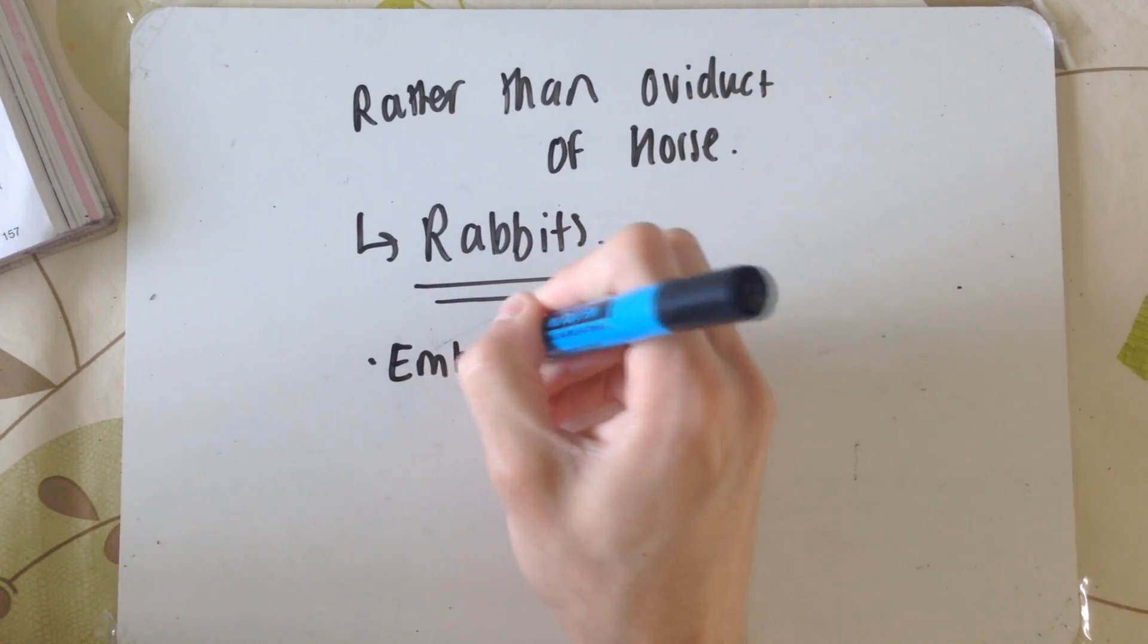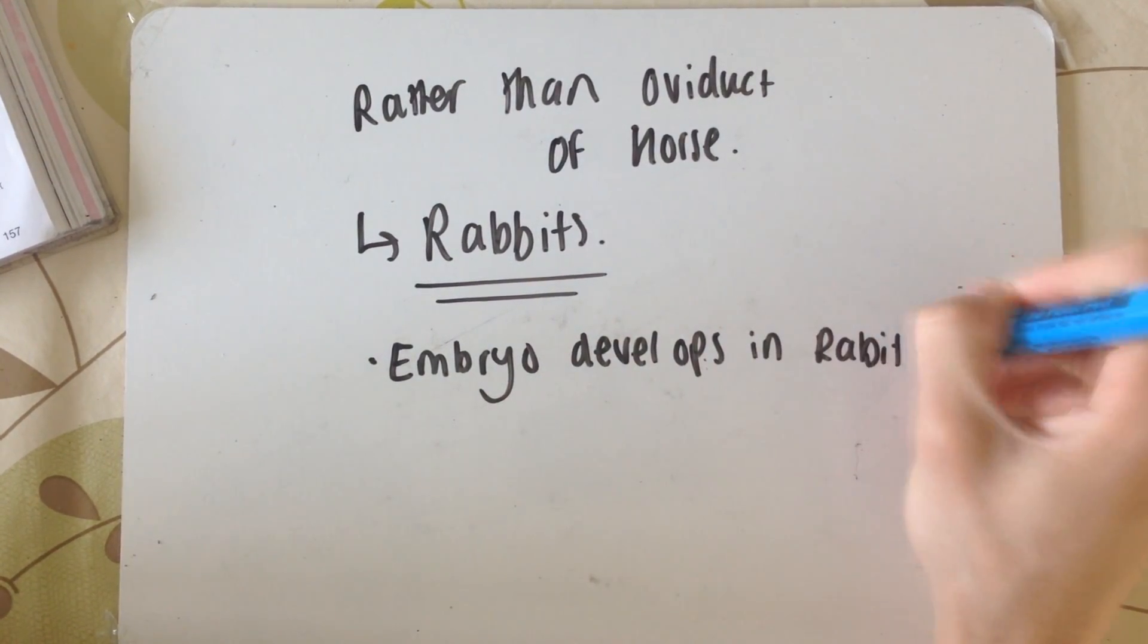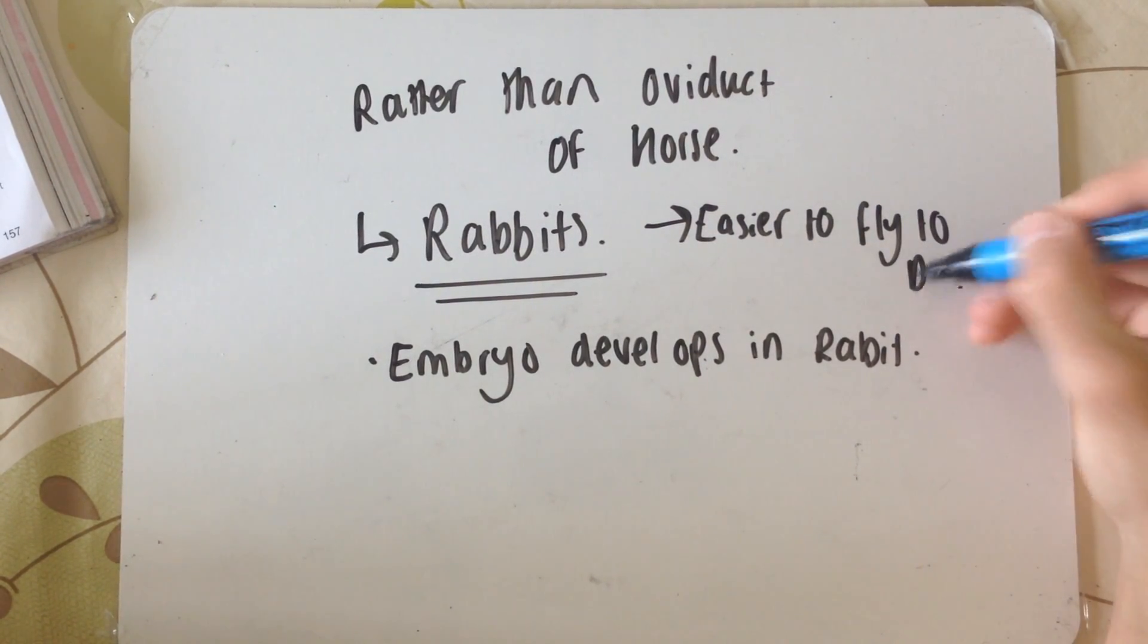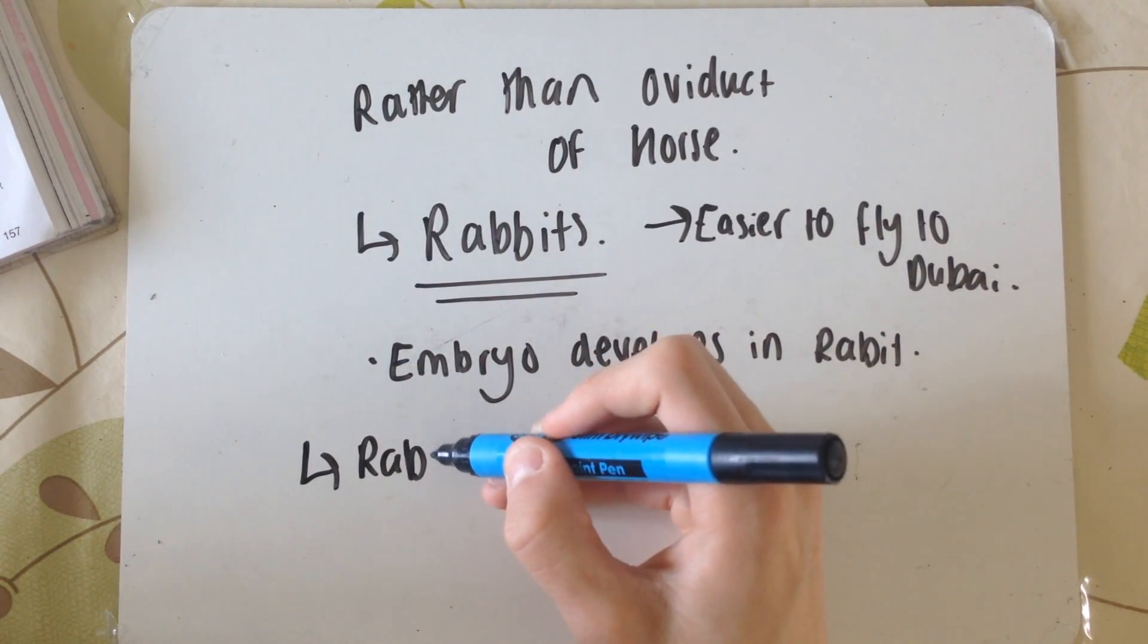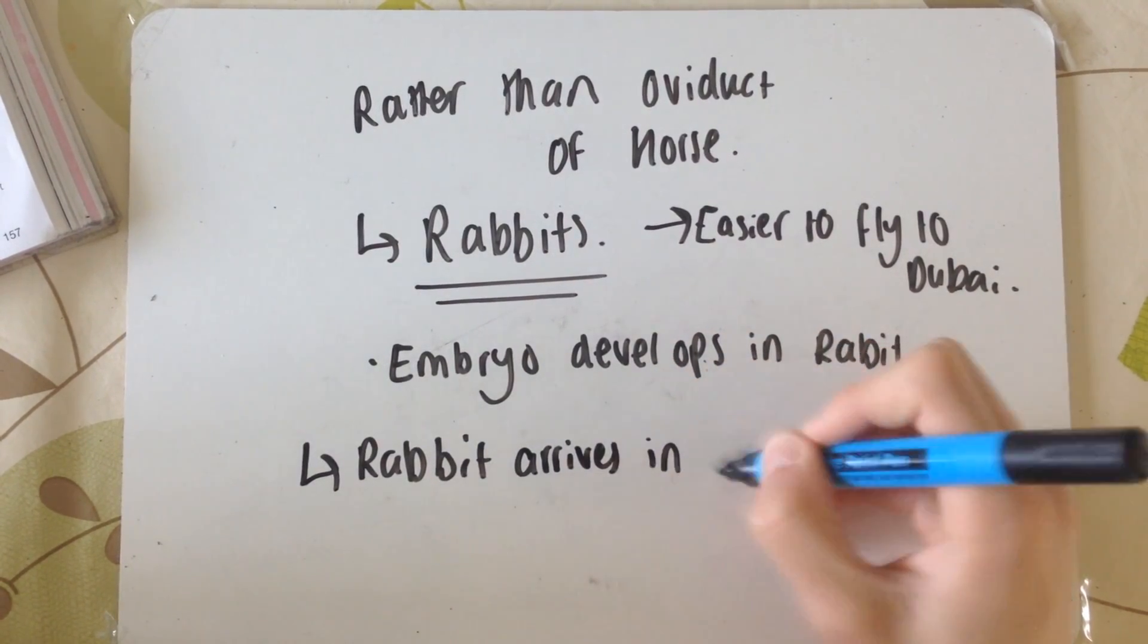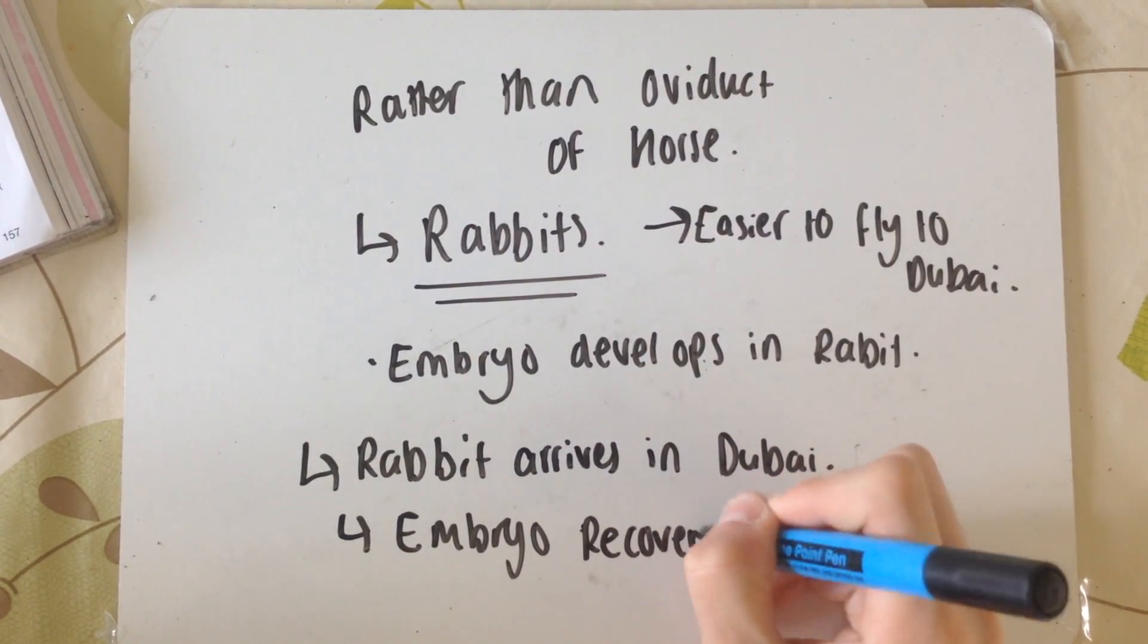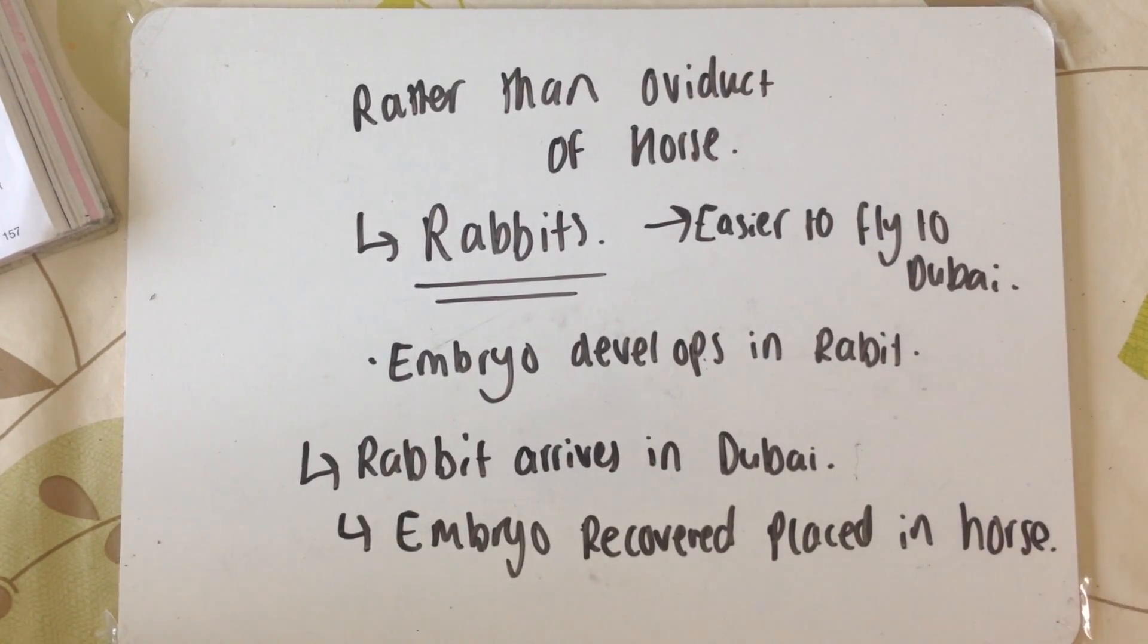The newly reconstructed cell with the cytoplasm and DNA is placed into rabbits rather than horses, because you can transfer a few hundred rabbits on a plane to Dubai. The egg develops into an embryo while in the rabbits. When you get to Dubai, the rabbits are taken off the plane, the embryos are recovered and inserted into surrogate mothers. The exam could ask about why you can use different animals.